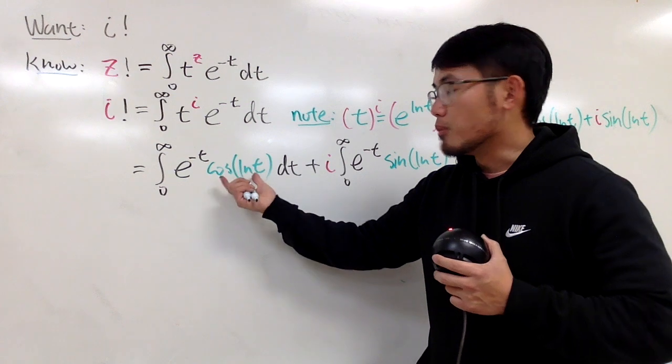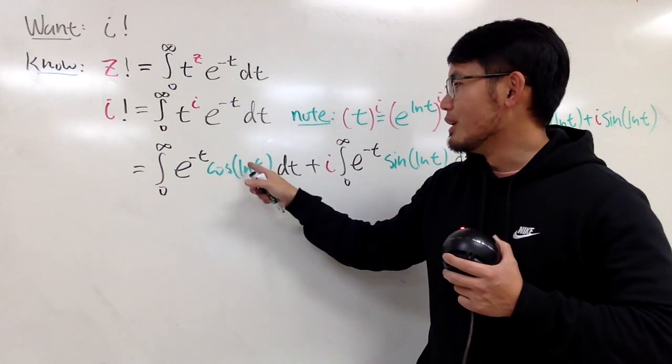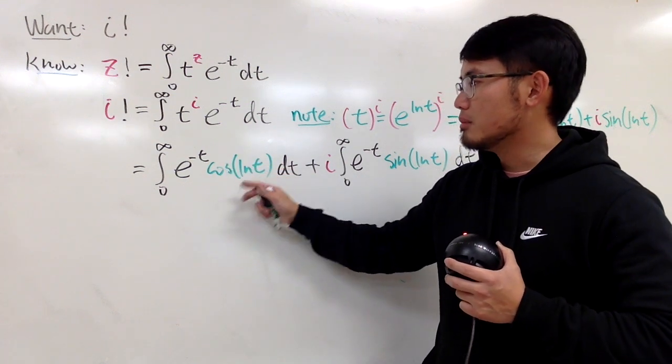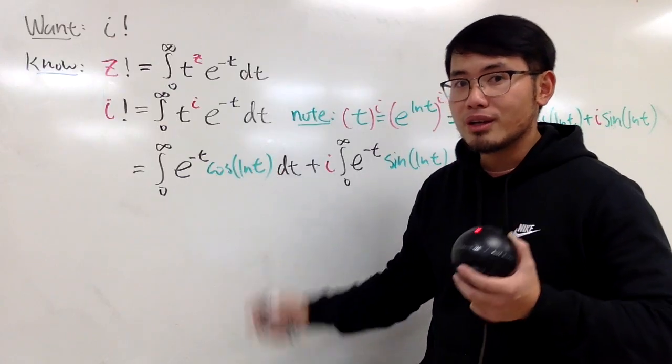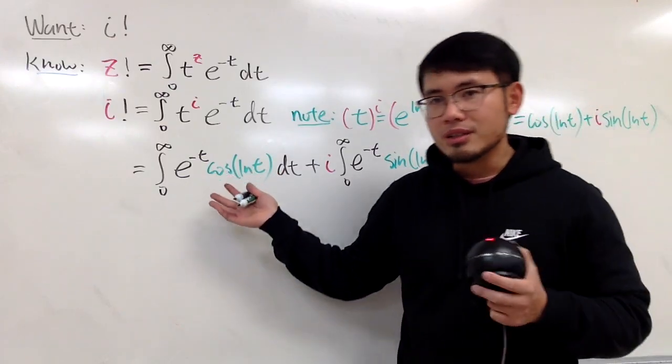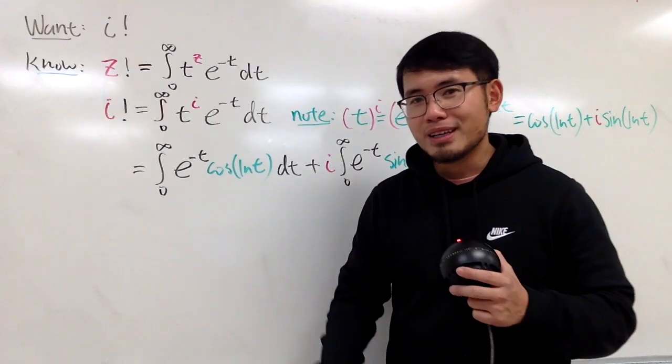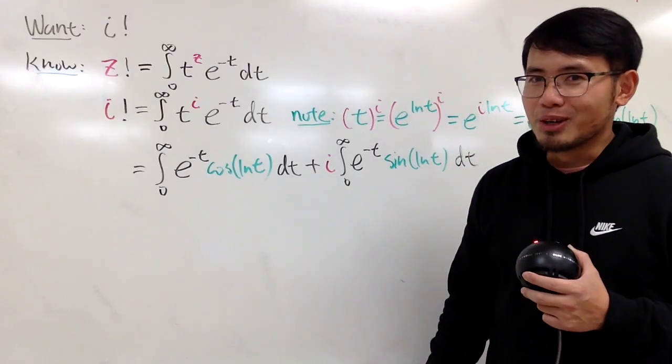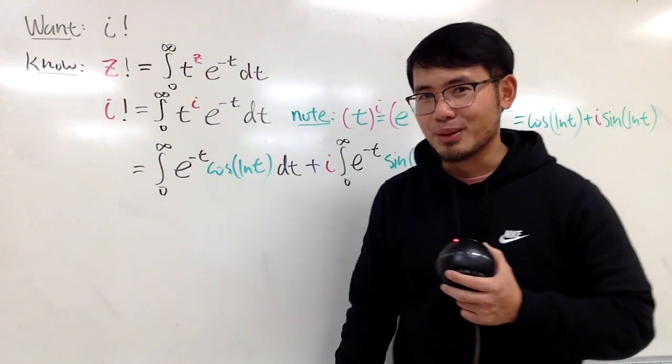And, this is just like, you know, at most 1. Even though, you have ln infinity, but cosine of that is at most 1 anyway. Technically, you have to use the squeeze theorem to prove it, but it's not a time to talk about proofs, because you guys want to talk about the i factorial, right?